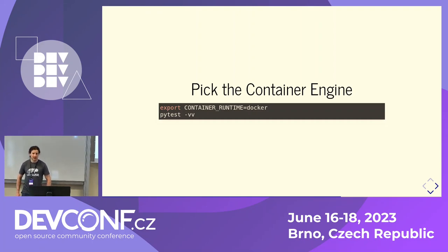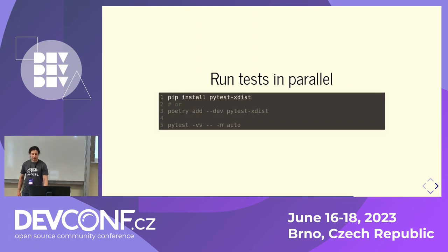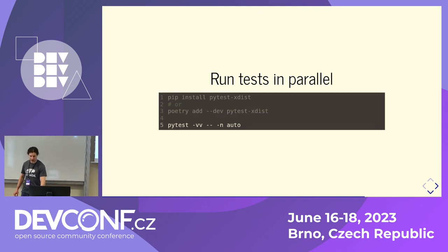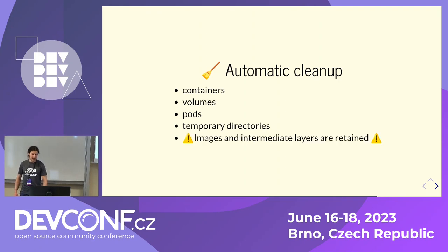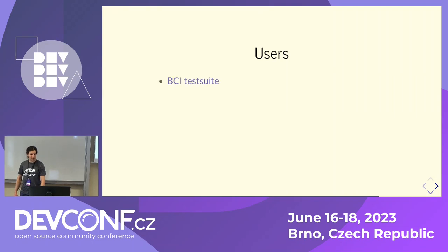As I said, you can use Docker or Podman — it will use Podman by default if it's installed, otherwise it will use Docker, and you can switch that by an environment variable. You can run tests in parallel by just installing pytest-xdist and passing the -n auto flag. If you run heavy tests you can murder your machine as much as you like, but it will run the tests in parallel and way faster. The plugin really tries to clean up everything: all launched containers get destroyed, all volumes get removed, all pods get removed afterwards, all temporary directories. What is retained are images and intermediate layers, just because then the tests would take ages to execute.